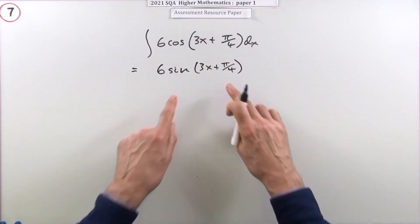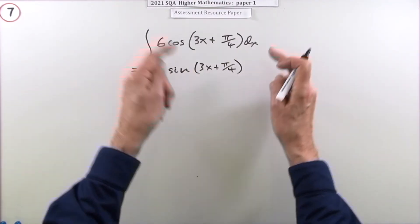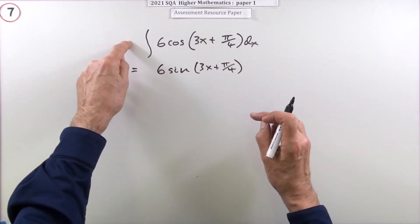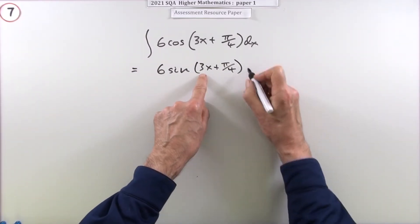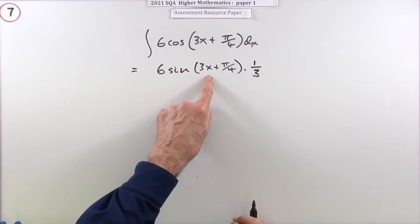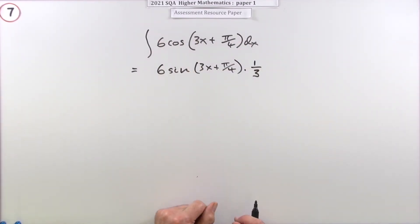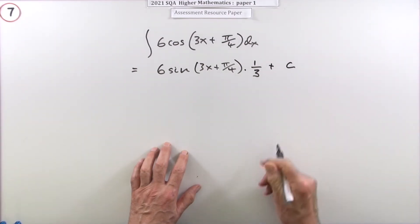And then if you were differentiating, you'd have multiplied by the inner derivative. Since you're doing the opposite, which is integrating, you're going to divide by the inner derivative. The inner derivative is a three. So divide by that three. Because you notice there's no factor of three up here. So divide by that three.